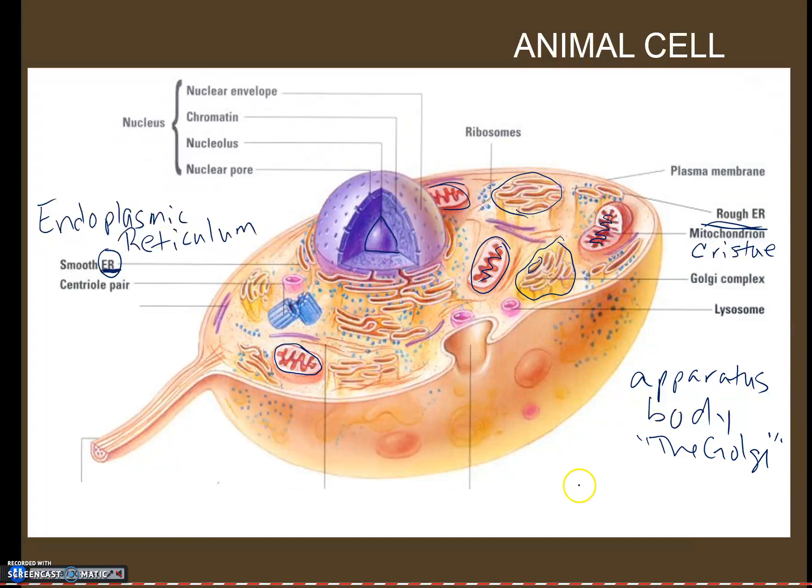Next, we have a lysosome. The Latin-based word, lys, L-Y-S, means to destroy or to split. So a lysosome is going to be an organelle that travels around the cell and destroys or digests old or worn out cell parts or damaged cell parts. So your lysosomes are kind of like your garbage men of the cell. They clean it up.